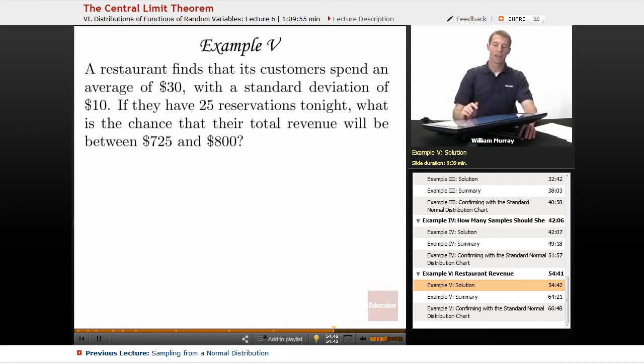We have a restaurant that is worried about how much money it's going to make tonight. It has done some studies and found that its customers spend an average of $30 per customer, but they have a standard deviation of $10, which means maybe if somebody just has an appetizer and a drink, maybe they only spend $20. Maybe if they really go for the full menu and have drinks and dessert and a few different extras, then they're going to end up spending $40 or even more.